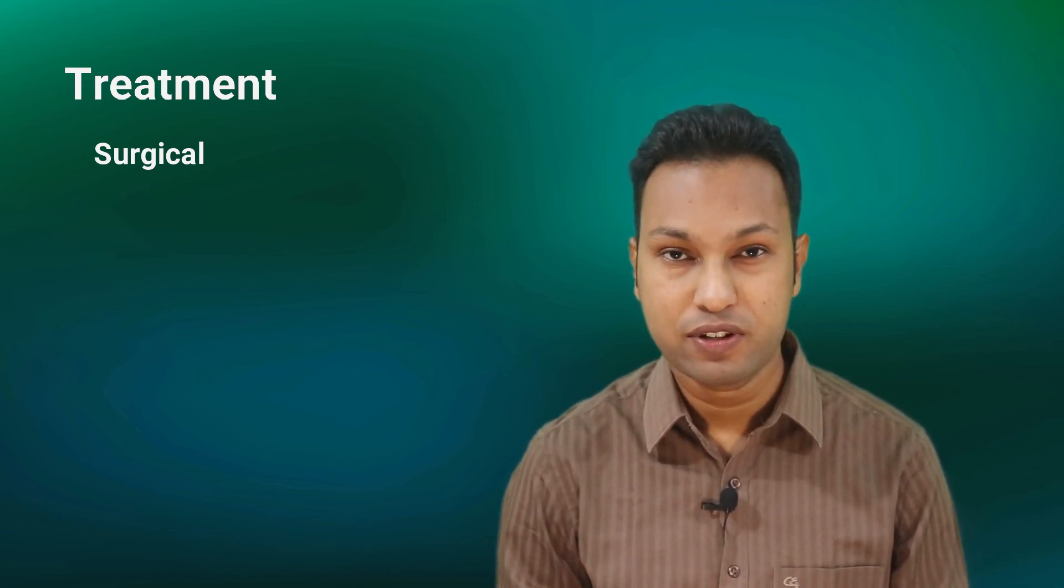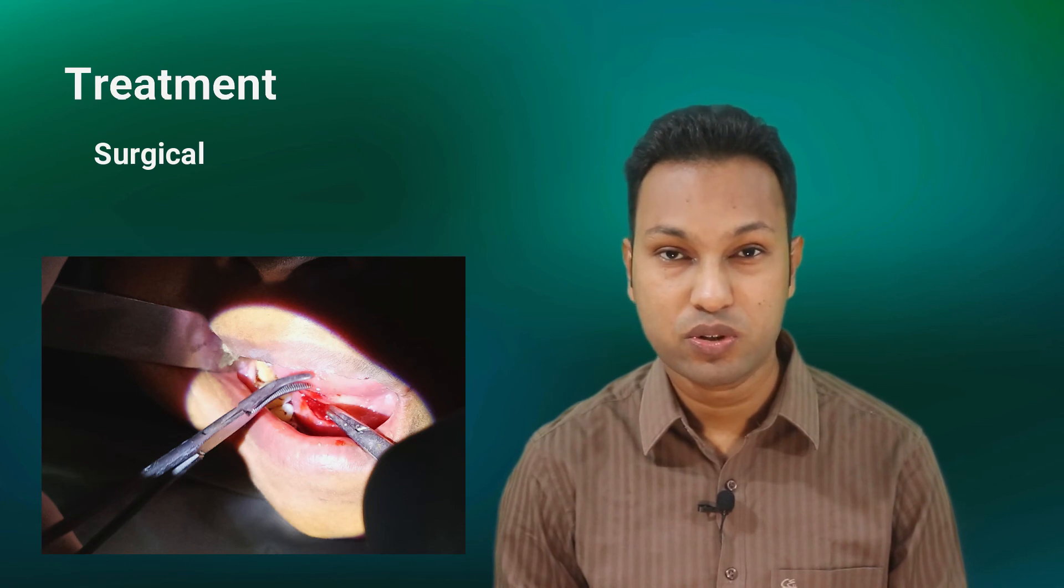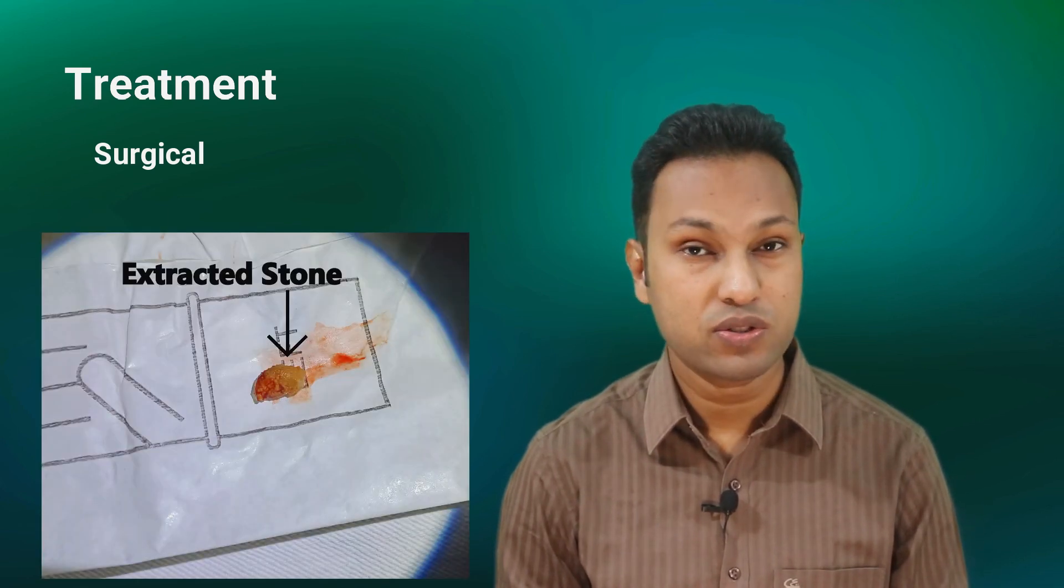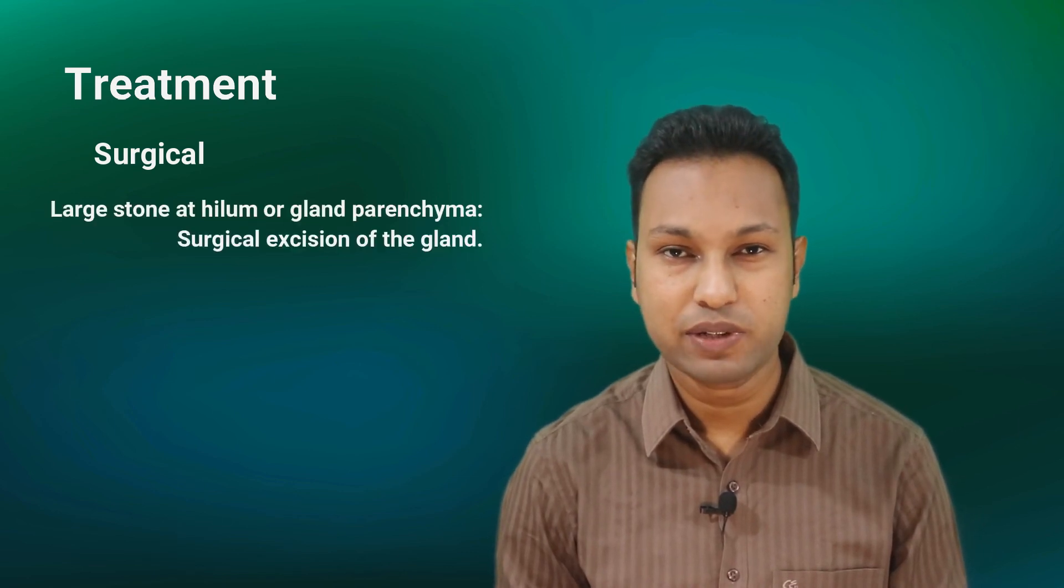The surgical options are based on the location of the stone. If the stones cannot be expressed through the duct opening, then intraoral extraction may be required. The duct papilla can be dilated with the help of lacrimal probe and a stone is expressed. If the stone is large enough, then more extensive operation at general or local anesthesia may be required. The duct is cannulated. An incision is made over the stone on the duct to allow extraction. No closure of the incision is made, and attention is paid to the adjacent lingual nerve. Larger stones embedded at the hilum of the gland or into the gland parenchyma require excision of the gland.